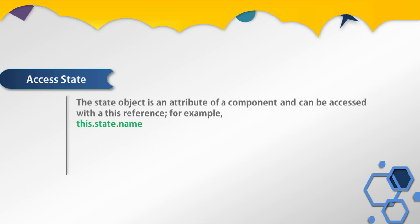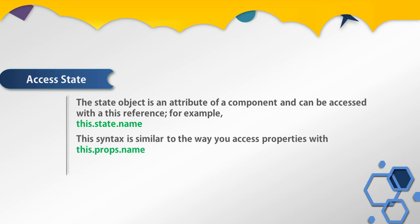The state object is an attribute of the component and can be accessed with the `this` reference — for example, `this.state.name`. Using this syntax we are accessing a property called `name`. This is similar to the way you access properties with `this.props.name`.